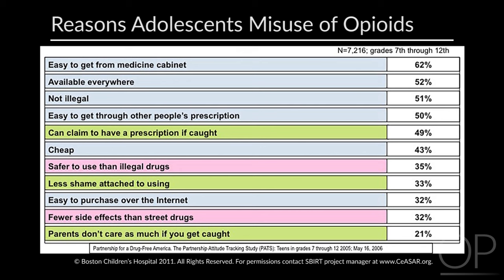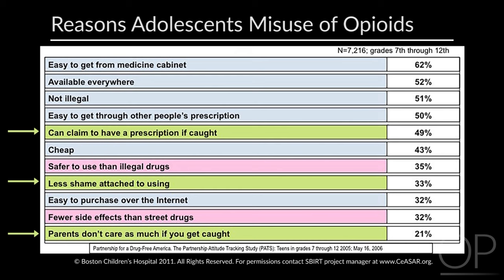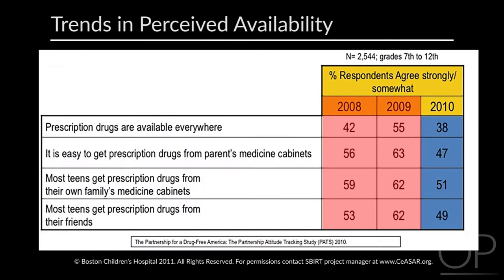This slide shows reasons adolescents endorse for misusing pain medication, grouped into three major categories. In blue, adolescents suggest these medications are easy to get. In green, adolescents indicate they face less trouble if caught with these medications compared to other drugs. In pink, reasons suggest adolescents believe these medications are safer than illegal or street drugs. From 2008 to 2009, there was a big increase in perceived availability, but the trend started moving down between 2008 and 2010, suggesting some public health campaigns on decreasing opioid medication misuse started paying off.